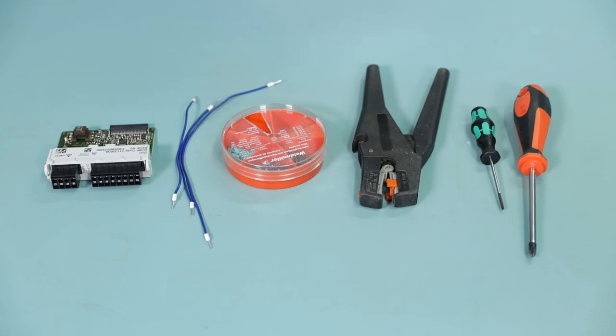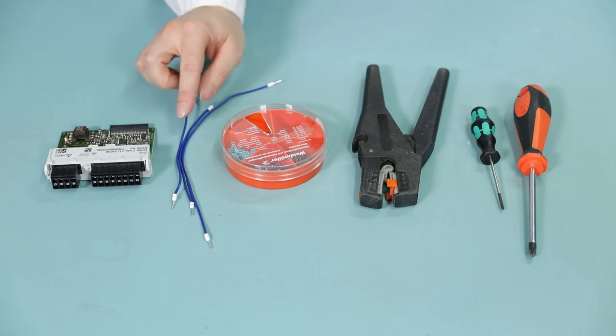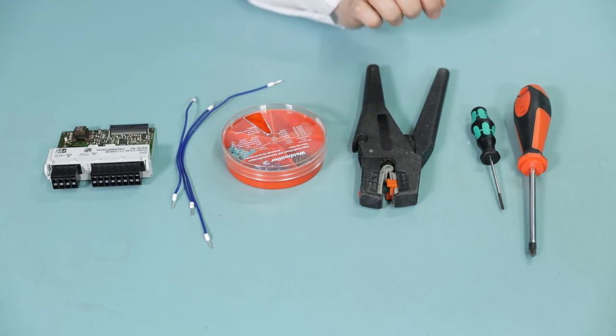For installation, the following components are required and not included in the delivery: the DIO module for the Liquiline transmitter CM44, three connecting cables approximately 20 cm, they will be added soon to the scope of the delivery but not so far, ferules, a cable stripper and screwdrivers.